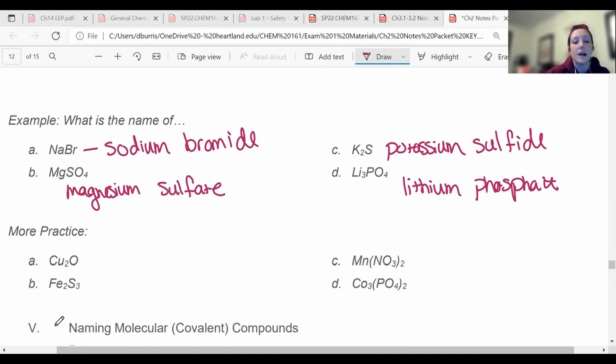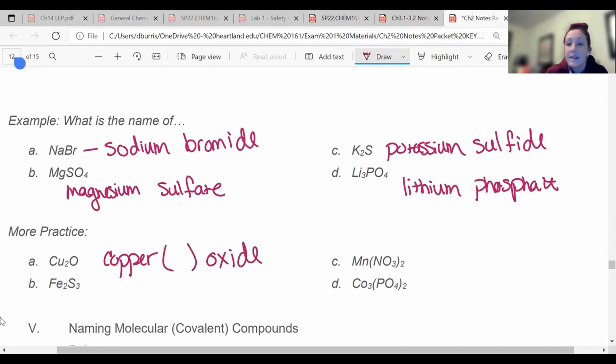Now these ones are practice with Roman numerals. So I'm going to do A and C and you guys can try B and D. So A, I've got copper and oxygen. Now copper is a transition metal. If you look at the periodic table, it's in the middle. It can be a plus two or plus three. It can actually have a couple of different charges. So I know I'm going to have to put a Roman numeral in parentheses, but I'll worry about that in a second. And then the end is going to be instead of oxygen, oxide.